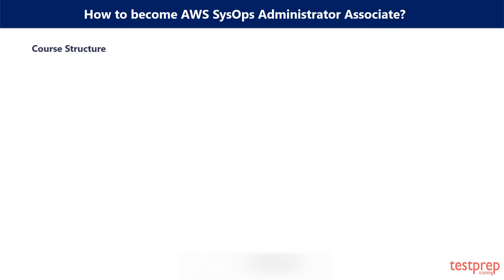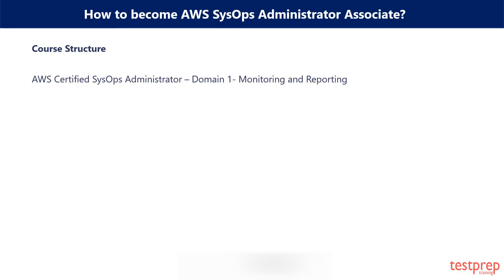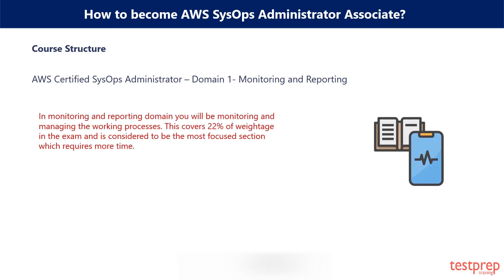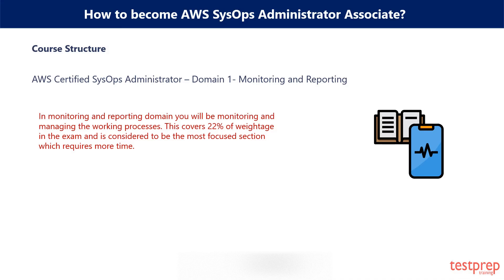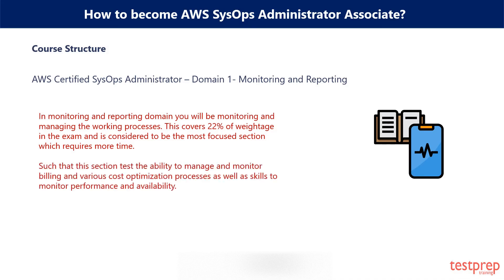Domain 1: Monitoring and Reporting. In the Monitoring and Reporting domain, you will be monitoring and managing the working processes. This covers 22% of the exam weightage and is considered the most focused section, which requires more time. This section tests the ability to manage and monitor billing and various cost optimization processes, as well as skills to monitor performance and availability.